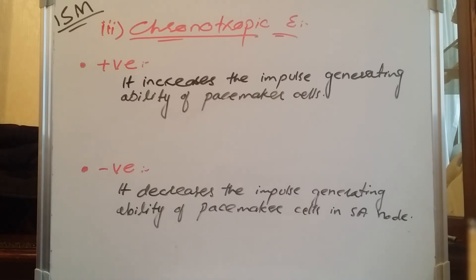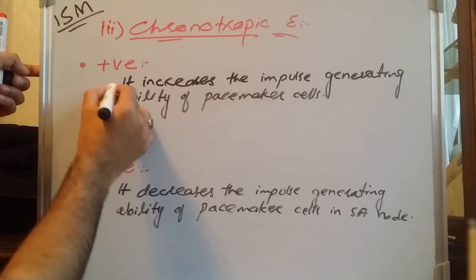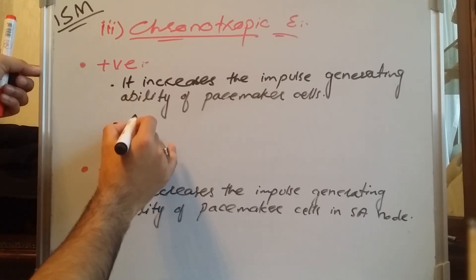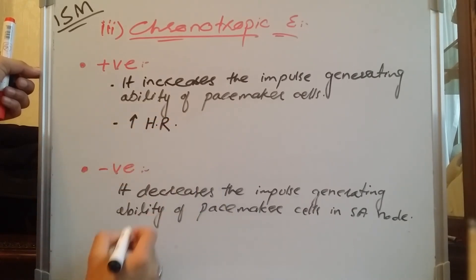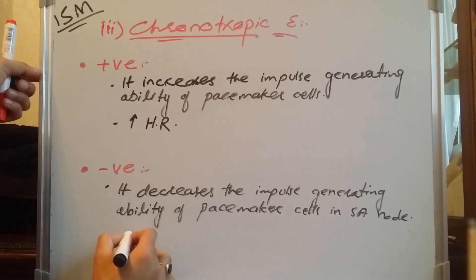If the pacemaker cells are producing 70 to 90 impulses per minute, the positive chronotropic effect — caused by neurotransmitters released by sympathetic neurons — will increase the production of impulses and automatically increase the heart rate. In contrast, when impulse-generating ability decreases, it automatically decreases the heart rate.